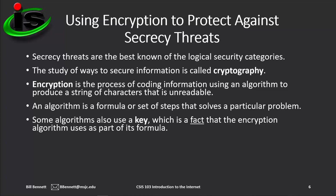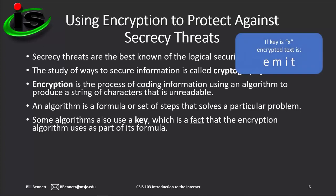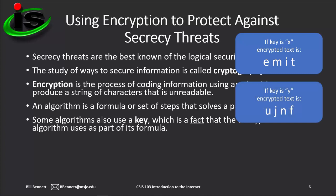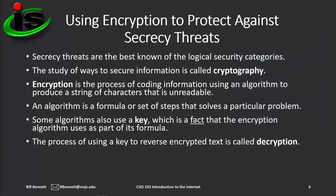Some algorithms use a key, which is a fact that the encryption algorithm uses as part of its formula. A simple algorithm that does not use a key is: list the letters backwards — for example, 'time' written backward would be 'emit' (e-m-i-t). An example of an algorithm that uses a key: if the key is X, list the letters backwards — 'time' becomes 'emit.' If the key is Y, use the next letter in the alphabet — 'time' would become U, J, and F. Using a key to process encrypted text so that it's readable is called decryption. To decrypt text, you use a key to unlock it. Without the key, the program alone cannot reveal the content of the encrypted message.